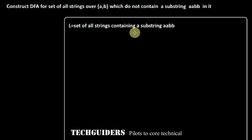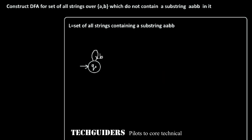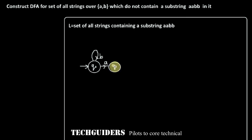To construct the DFA for language L, the automata will be in its initial state Q0, expecting the substring AABB. As long as it sees any number of B's, it remains in state Q0. When it sees the symbol A, it moves to another state Q1, which remembers that the part A of the substring AABB is already seen, and from this state it is expecting ABB.